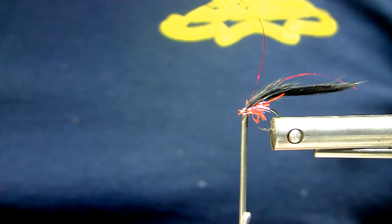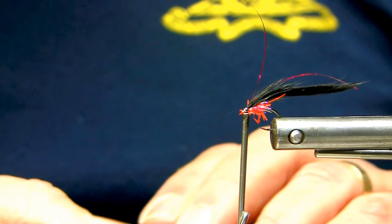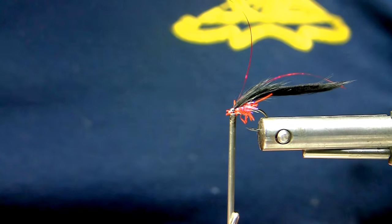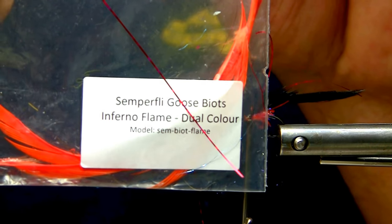Again what I like to do is add a little bit more contrast into the pattern. I'll take these Inferno Goose biets from Zemperfly. They're kind of a dual tone color.